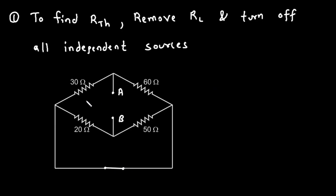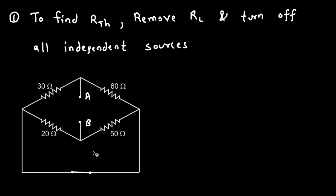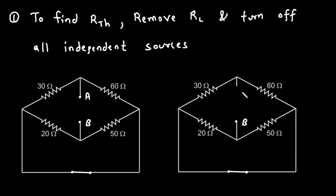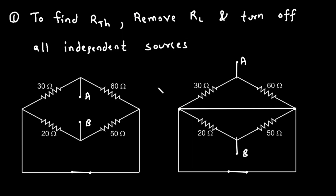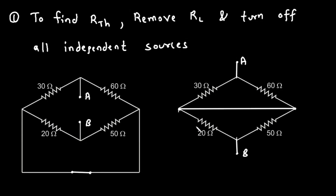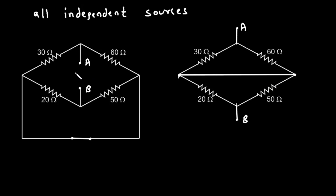Now, if we redraw this circuit, terminal A will go on this side and terminal B will be on the other side. This node and this node are connected. We can now clearly see that this 30 ohm and 60 ohm are connected in parallel, and they are in series with this 20 ohm parallel with 50 ohm.